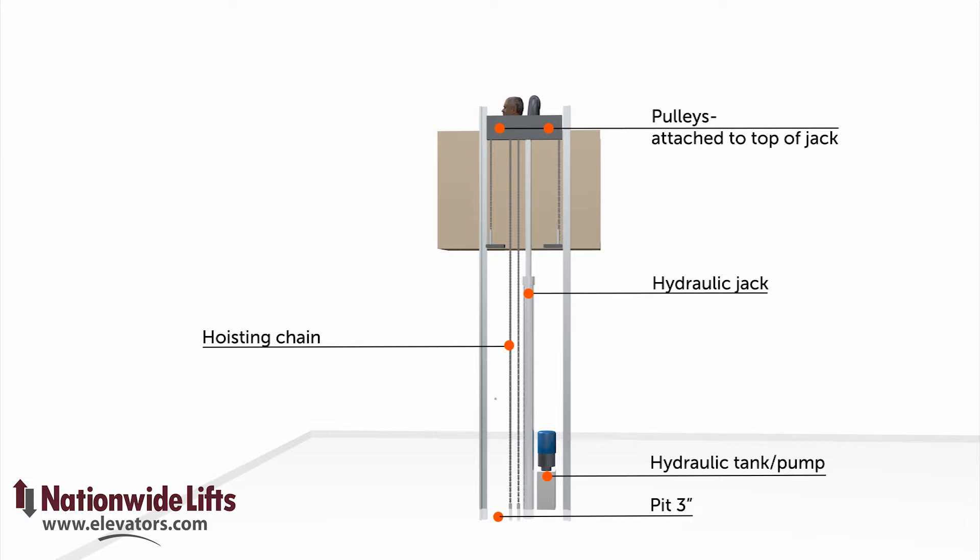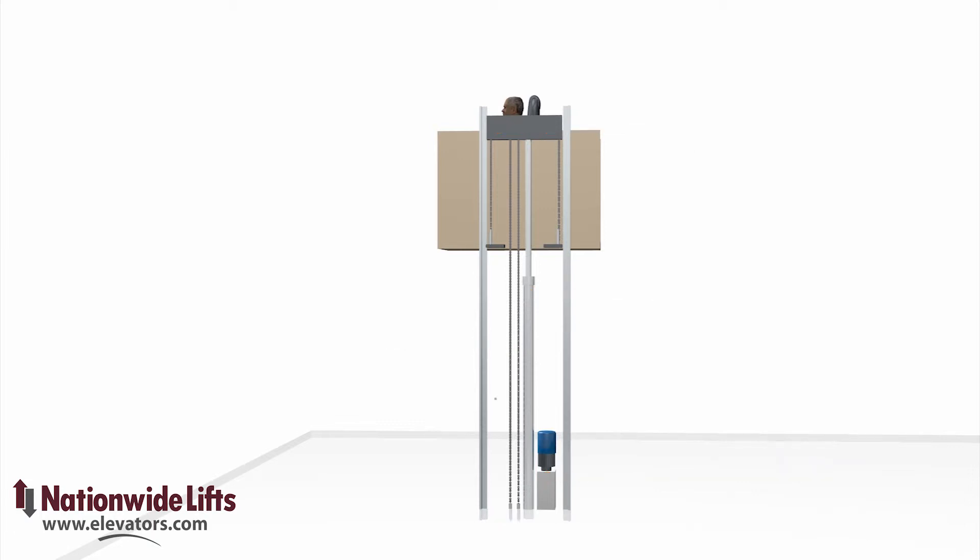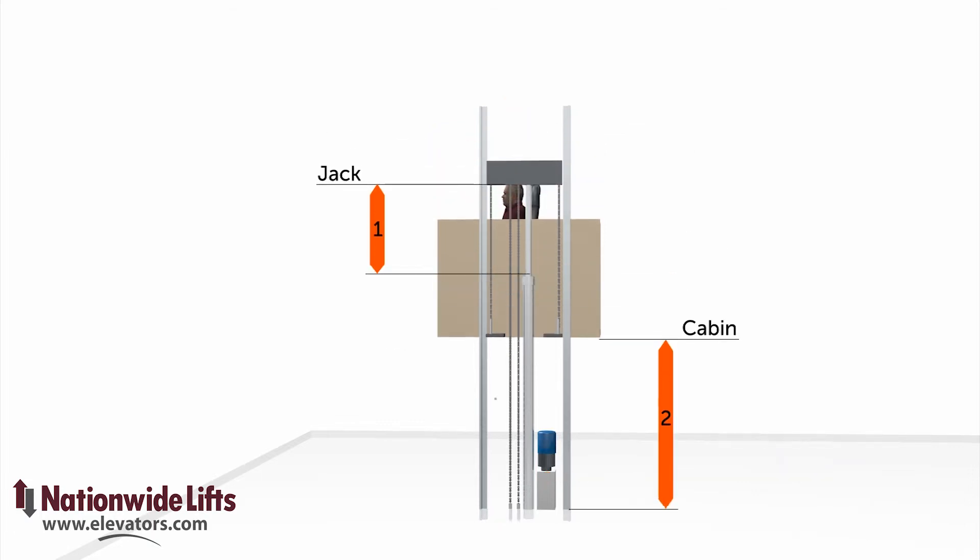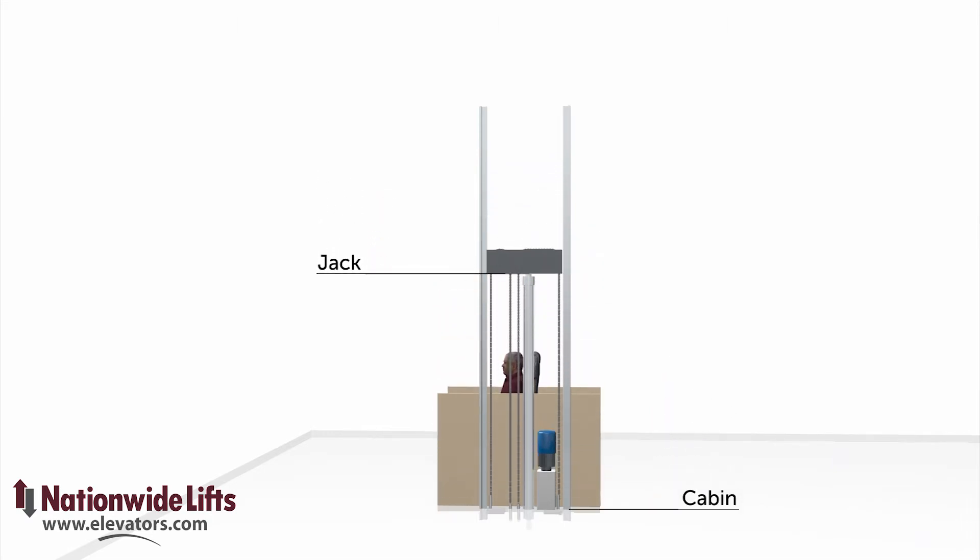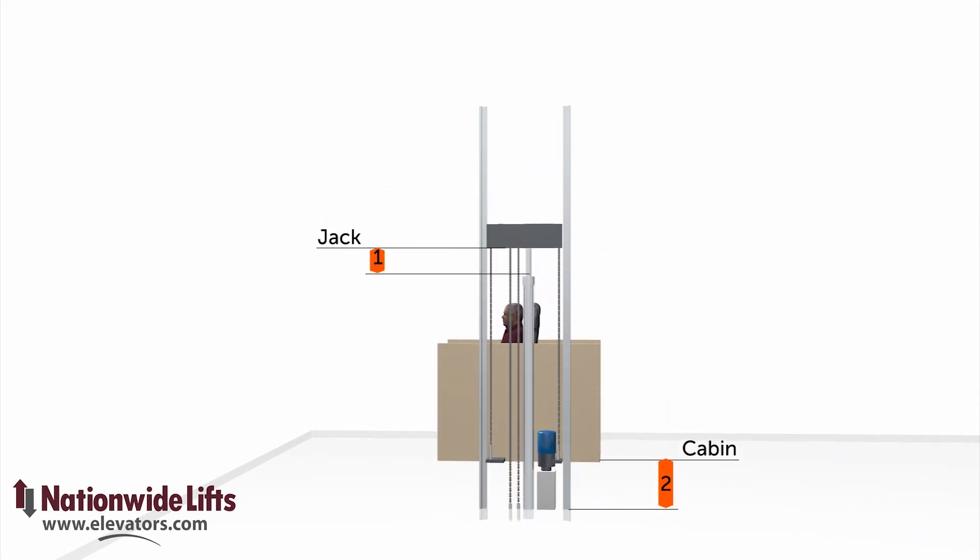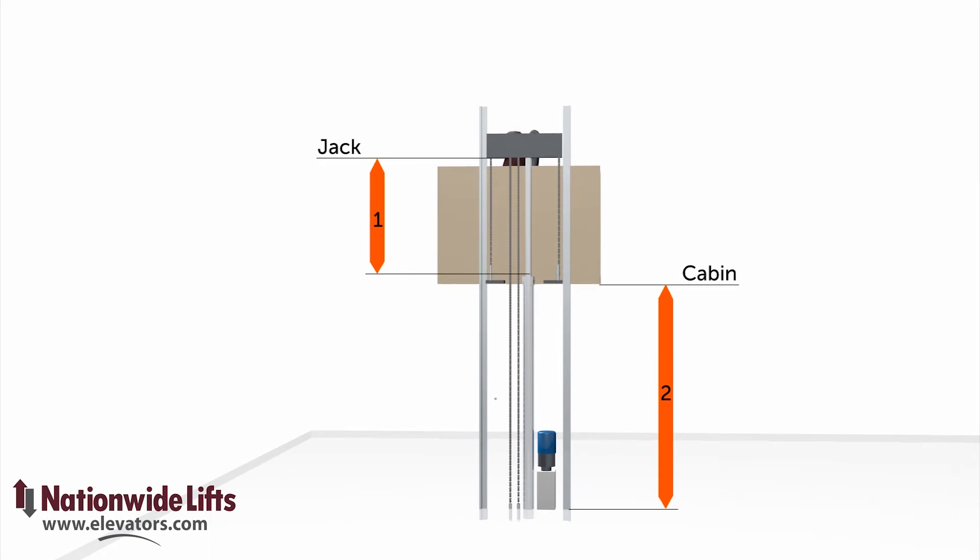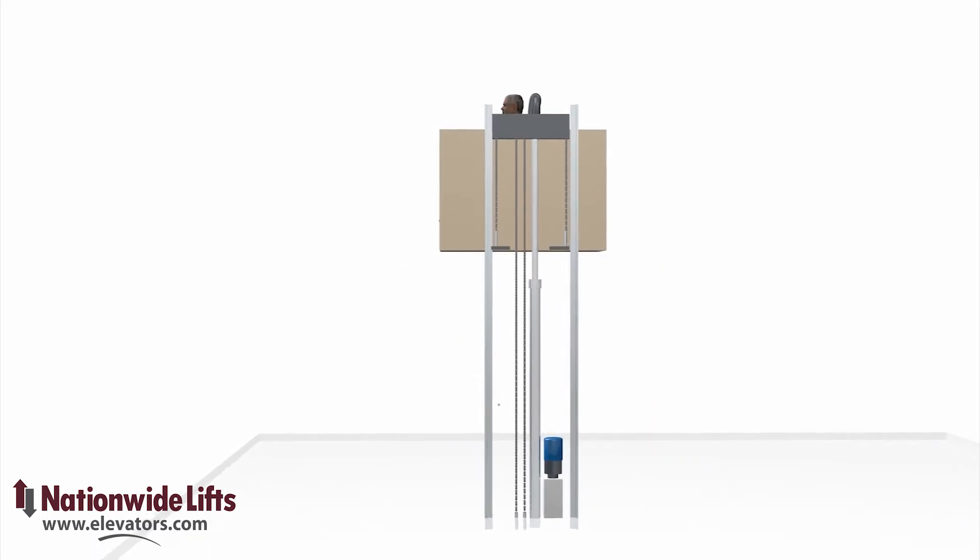This lift needs a shallow pit or short ramp. The chained hydraulic system uses the pulleys to give it a two-to-one movement ratio. For every one foot that the jack moves, the platform moves two feet. This is how the unit can operate without digging a deep hole for the hydraulic jack.